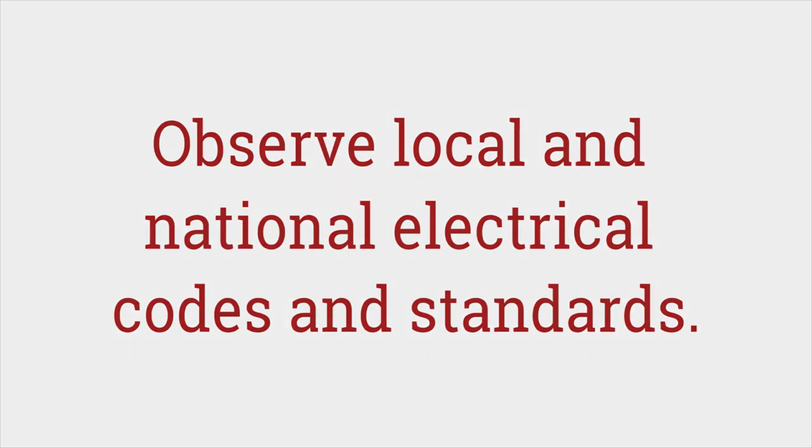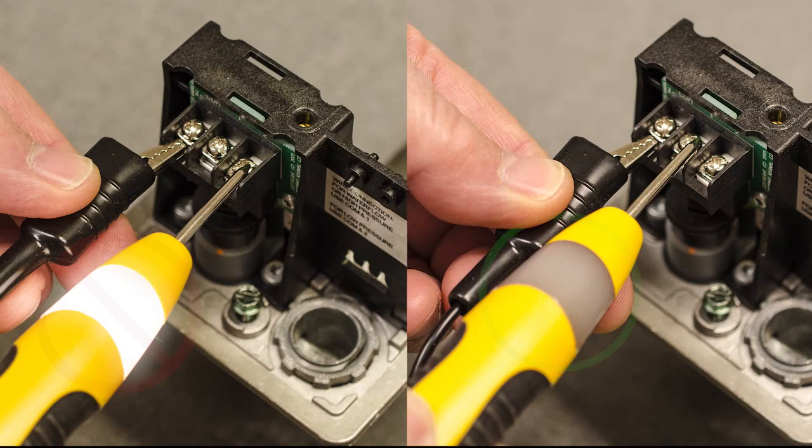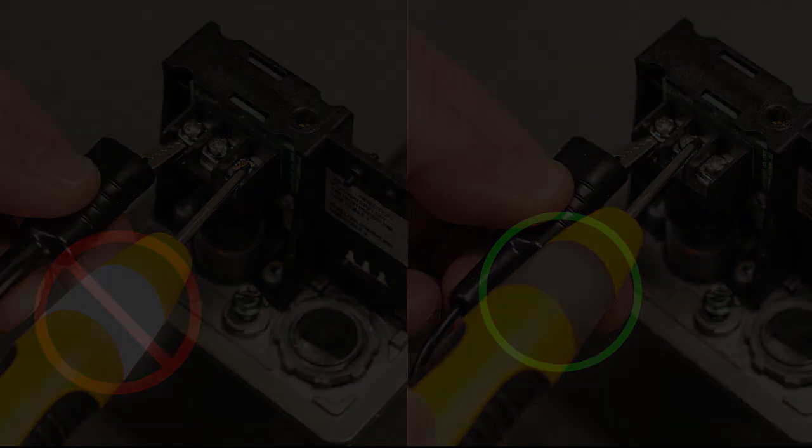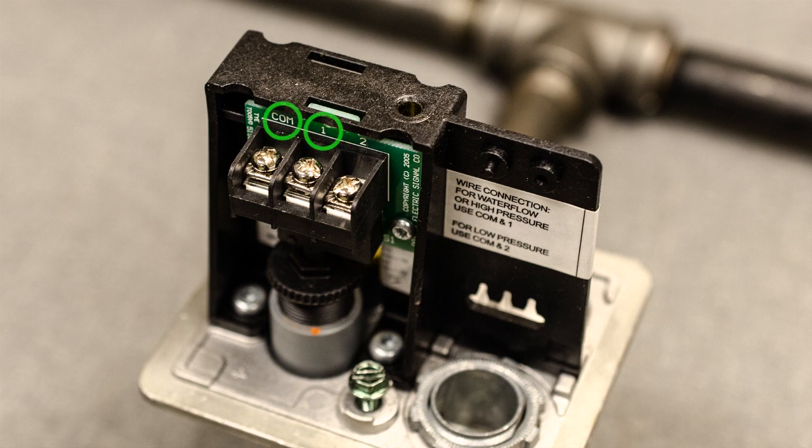Use an ohm meter or continuity tester to make sure you have the normally open switch contacts. These would be the terminals with no continuity when there is no pressure or water flow on the PS10.